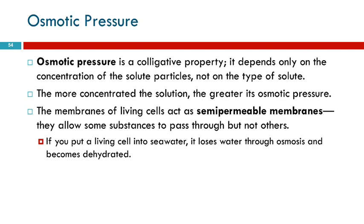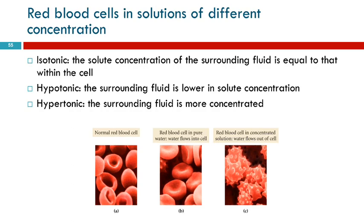Living cells act as semi-permeable membranes. If you put a living cell into seawater, it loses water through osmosis and becomes dehydrated. Here's the application with red blood cells. Red blood cells normally have a donut shape — nice and round. There's a concentration of solutes inside the cells and in the blood plasma around them. When those are nicely balanced, the blood cells are the right shape. This is called isotonic — iso meaning the same — so the solute concentration outside equals the concentration inside the cell.